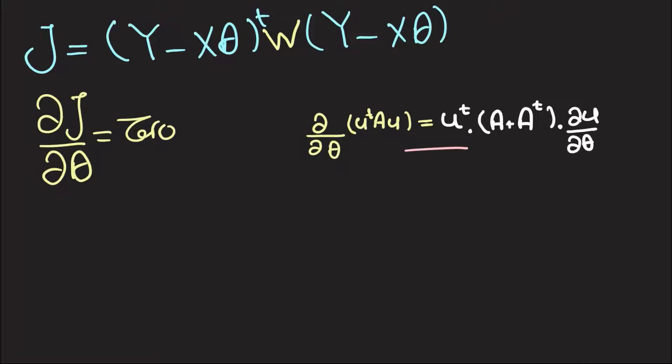I mean scalars with respect to vectors. So, here u is going to be y minus x theta, our constant matrix A is going to be w, and we can write down partial j over partial theta is equal to u transpose, so y minus x theta transpose multiplied by w plus w transpose multiplied by partial over partial theta of y minus x theta.